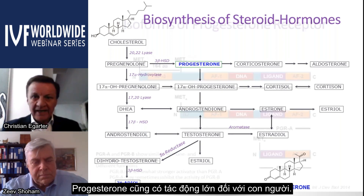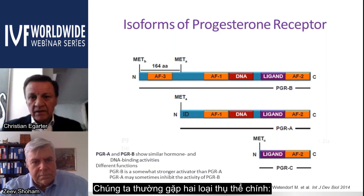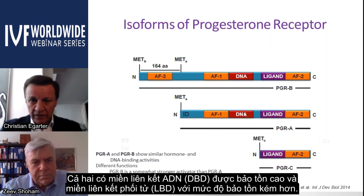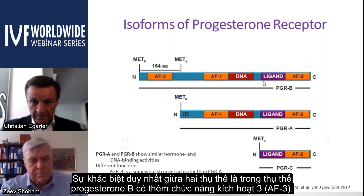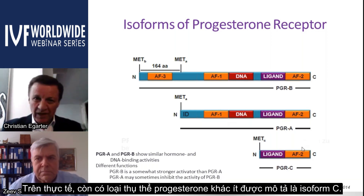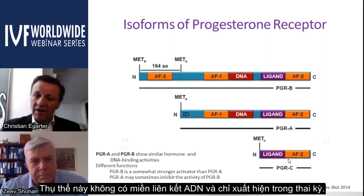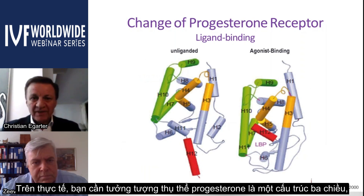Progesterone needs a receptor to work within a cell. There are two main types: progesterone receptor A and B, both displaying a highly conserved DNA-binding domain and a less well-conserved ligand-binding domain. The only difference is an additional activation function 3 in receptor B. There is also isoform C, which is less well described, lacks a DNA-binding domain, and is only present during pregnancy, suggesting more regulatory and modification activity.